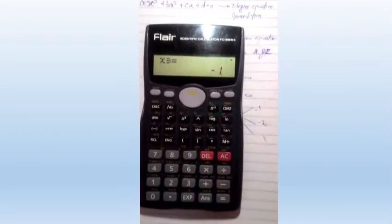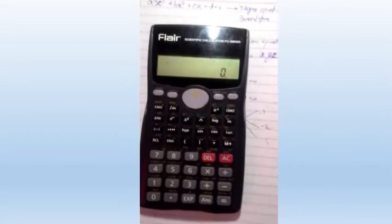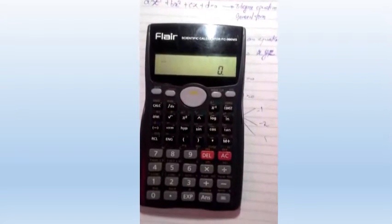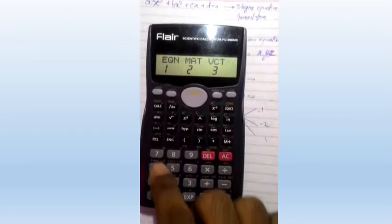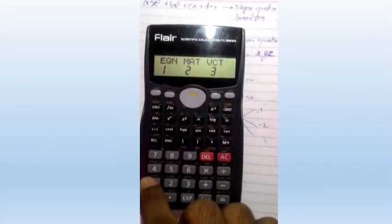To do that, we have to first change the mode to equation form using the mode button. Just change into equation until you get the equation, click on that mode, and click on 1 to get the equation.